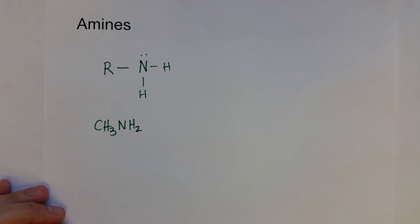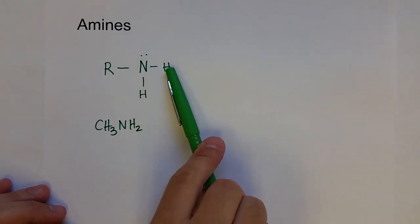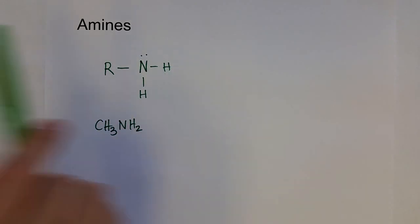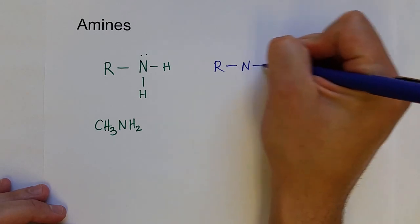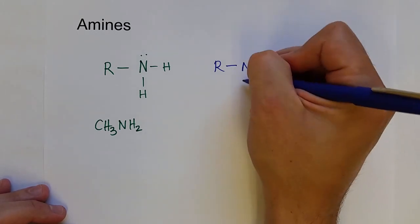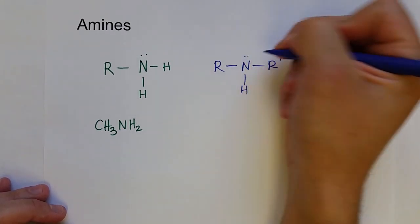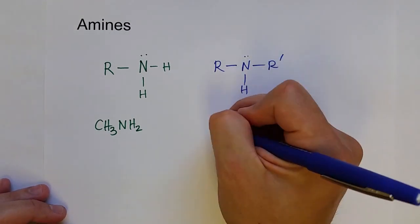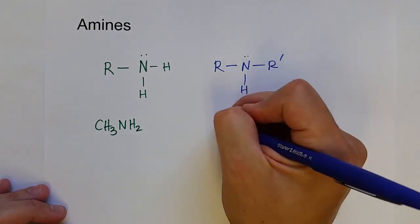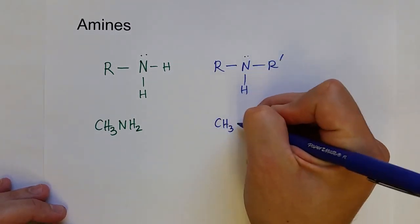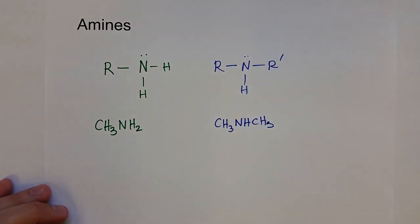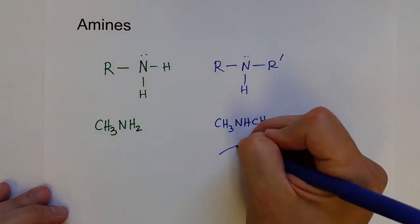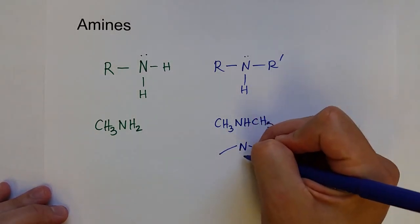Instead of connected to this hydrogen right here, it can be connected to another hydrocarbon, so R-N-R with some other hydrocarbon and then only one hydrogen. Of course we can say dimethylamine, so CH3-NH-CH3 would be the reduced formula, or we can draw this as NH.